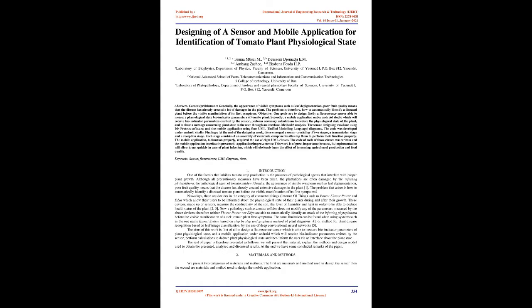Abstract context and problematic: generally, the appearance of visible symptoms such as leaf depigmentation and poor fruit quality means that the disease has already created a lot of damages in the plant. The problem is therefore how to automatically identify a diseased plant before the visible manifestation of its first symptoms.